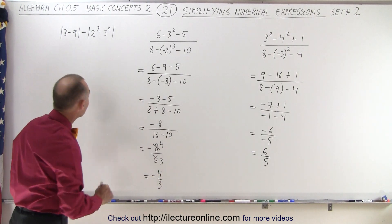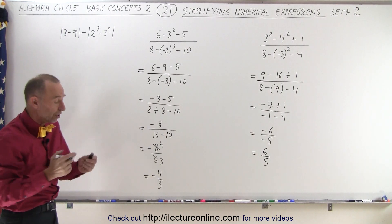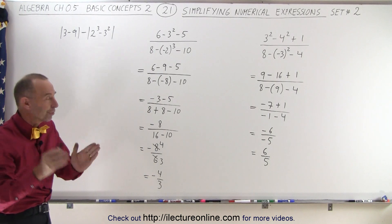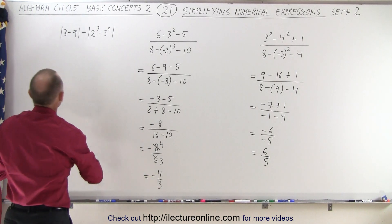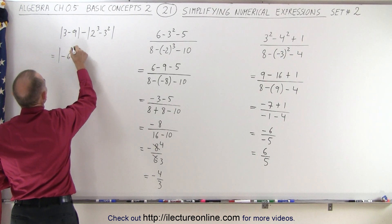And the last exercise right here, I have absolute value signs. So I treat those exactly the same as I treat parentheses. I do what's inside them first before I do anything else. So here, I have 3 minus 9. So this becomes 3 minus 9 is a minus 6.